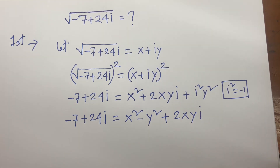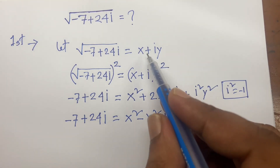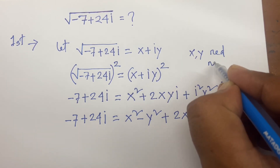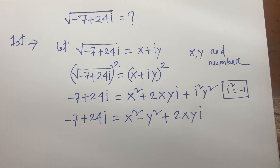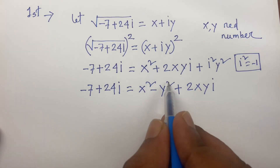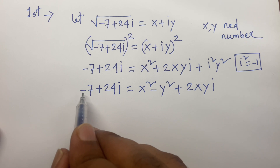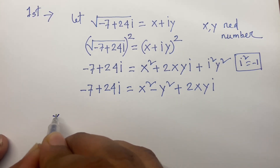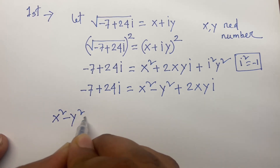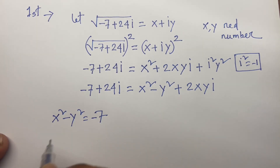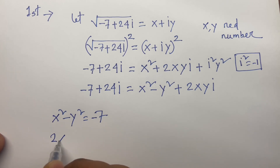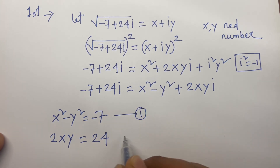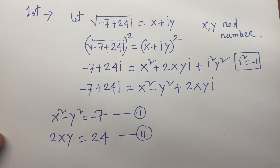Remember that x and y are real numbers. Comparing real parts: x² minus y² equals minus 7 — that is equation 1. Comparing imaginary parts: 2xy equals 24 — that is equation 2.